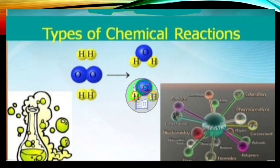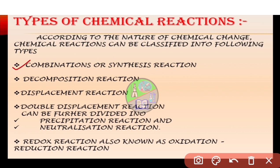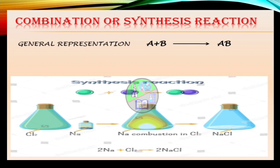In this module we will come to know about the types of chemical reactions according to the nature of chemical change. Chemical reactions can be classified into the following types: combination or synthesis reaction, decomposition reaction, displacement reaction, double displacement reaction — which can further be divided into precipitation and neutralization reaction — and finally the redox reaction, also known as oxidation and reduction reaction.